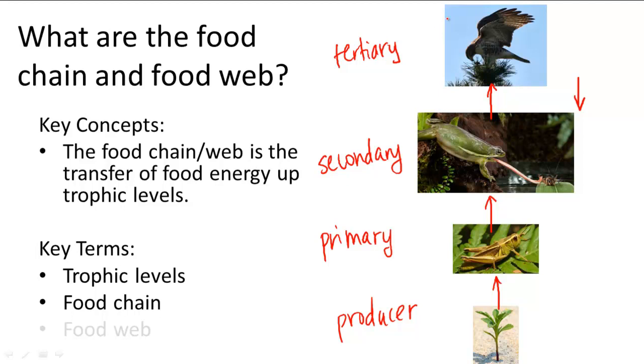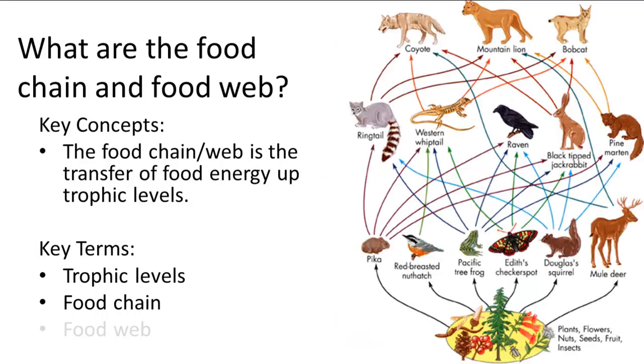And another thing is that consumers do not necessarily stay in their trophic level. For example, this hawk may be considered a tertiary consumer, but it can also eat primary consumers, such as mice. This complexity is incorporated into the food web.